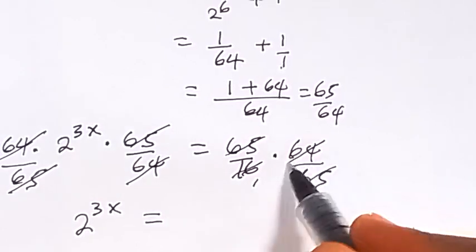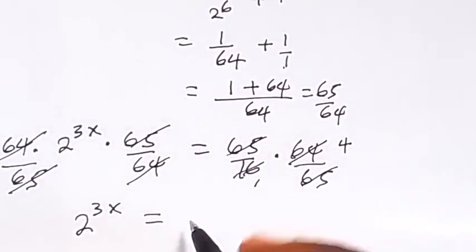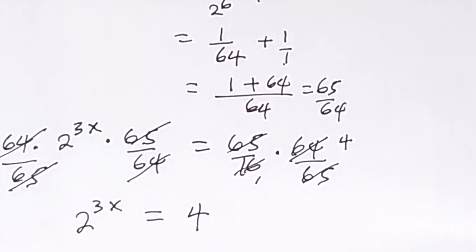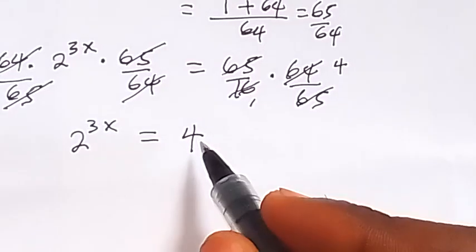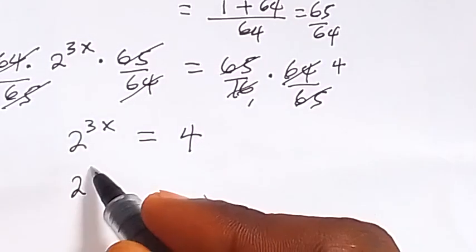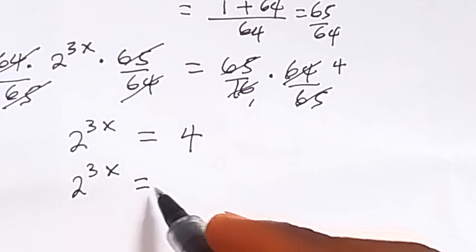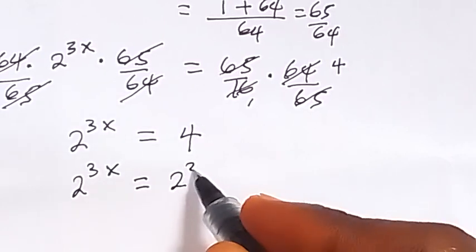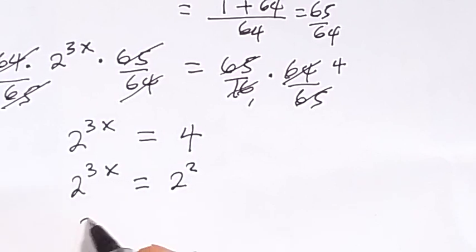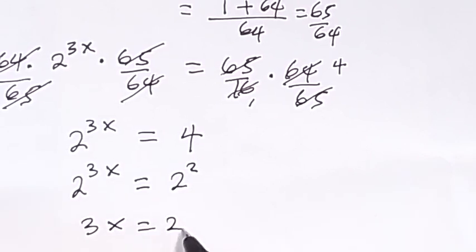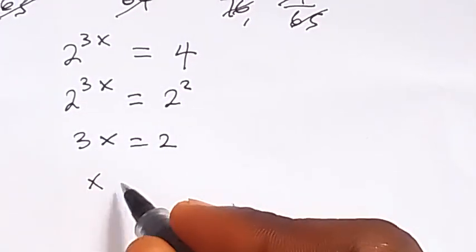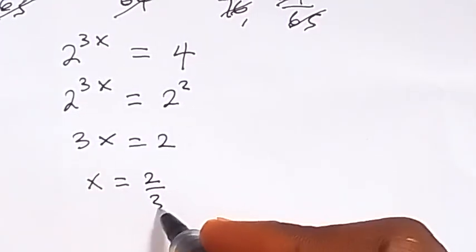On the right-hand side, 64 over 16 gives us 4. So 2 raised to power 3x equals to 4. We can express 4 as base 2 as well, so we have 2 raised to power 3x equals to 2 raised to power 2. Since the bases are equal, we equate the powers: 3x equals to 2. Dividing both sides by 3, we get x equals to 2 over 3.